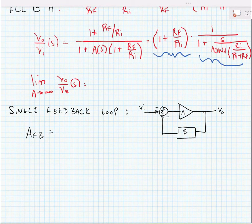If we were to take the limit of the gain Vo over Vi as a function of s, we would find that it would be equal to 1 + RF/RI if the gain of the op-amp tended towards infinity, in other words if the op-amp were ideal.